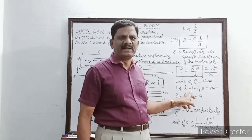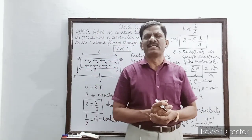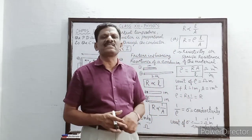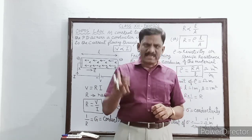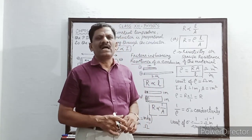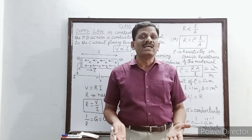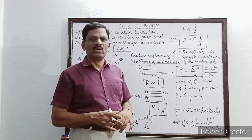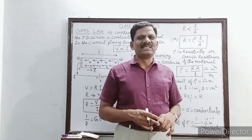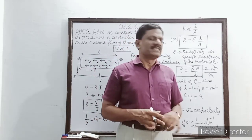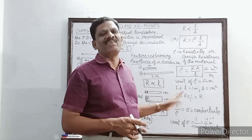When length is one metre and area of cross section is one metre squared, resistance equals resistivity — this gives the definition of specific resistance. The reciprocal of resistivity is conductivity σ, with unit mho per metre. Next, we are going to see the microscopic form of Ohm's law.